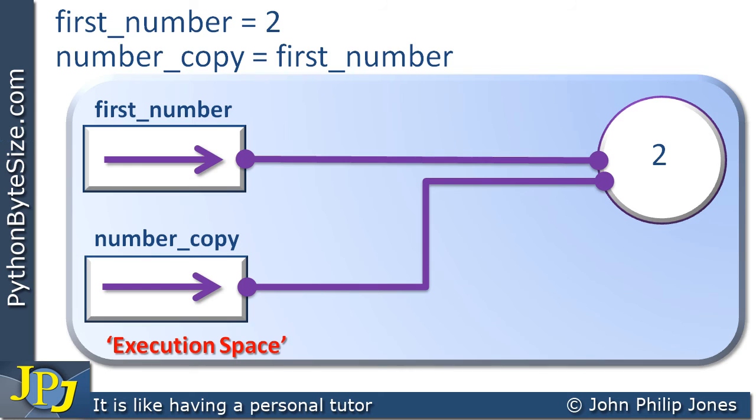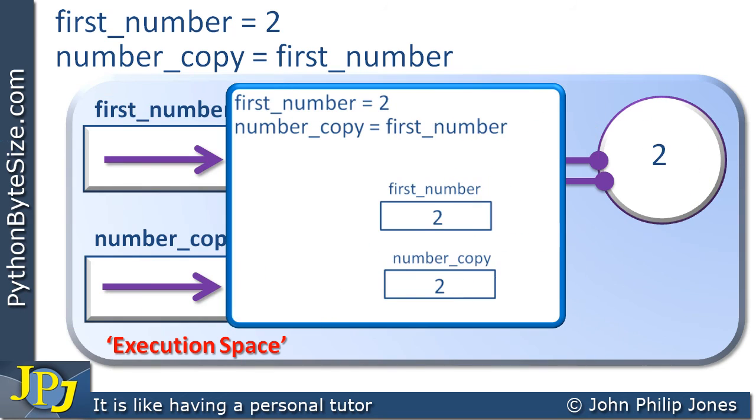Now you have a choice. You can go with this kind of understanding of what happens when we're dealing with integer objects. Or you can go with this, which we looked at a moment ago, where we simply regard them as variables, as areas of the memory. And we can see that the 2 was moved from one of the variables to the other.